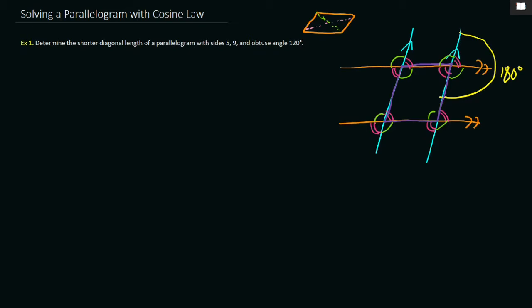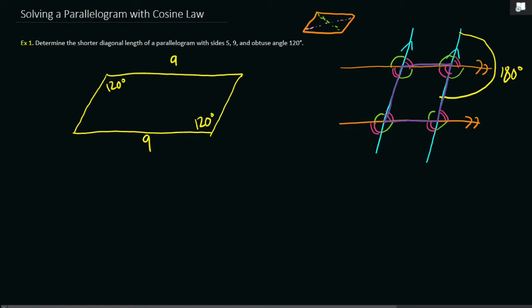So let's draw our diagram. So 5 and 9, so let's draw something like this. 120 degrees looks about that-ish. So our obtuse angles are both 120 degrees. Our long sides are both 9, and our short sides are both 5. And we are trying to find the shorter diagonal, let's call that x.